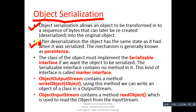After deserialization, the object has the same state as it had when it was serialized. This mechanism is generally known as persistence. So, serialized means storing the object into a file, and deserialized means retrieving the object back from the file.